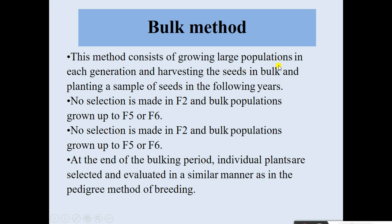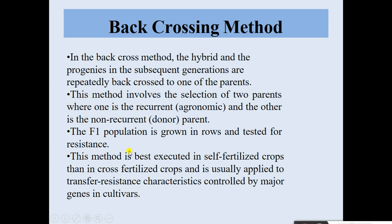The bulk method consists of growing large populations in each generation and harvesting the seeds in bulk, then planting a sample of seed in the following year. The bulk population is grown up to F5 or F6 generations. At the end of the bulking period, individual plants are selected and evaluated in a similar manner as in the pedigree method.